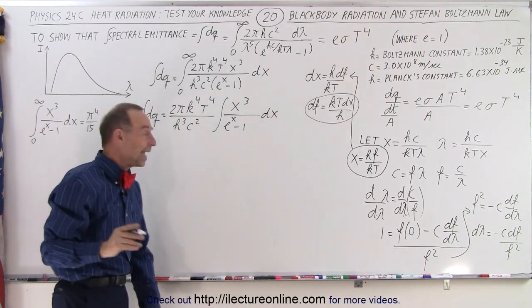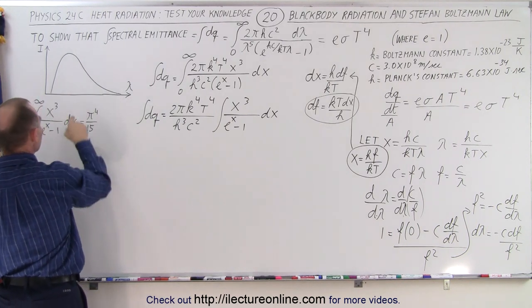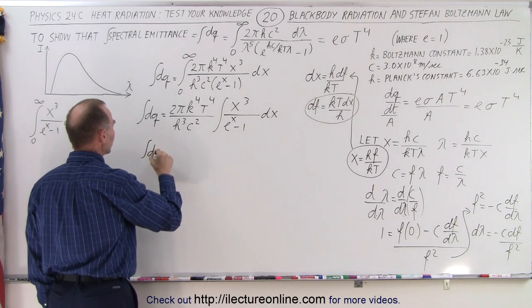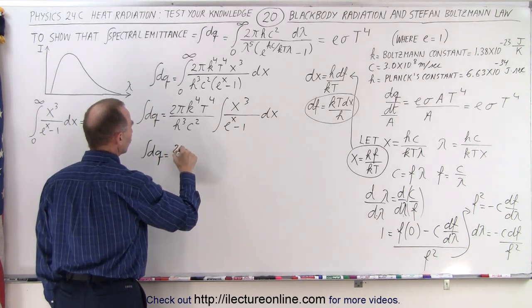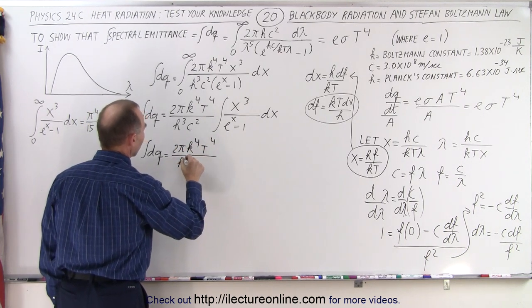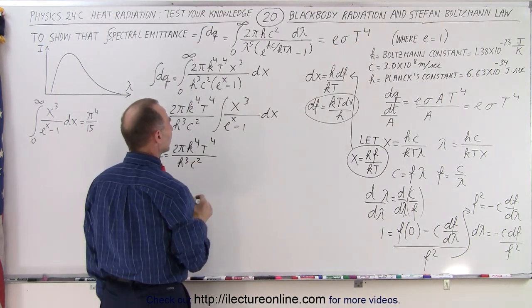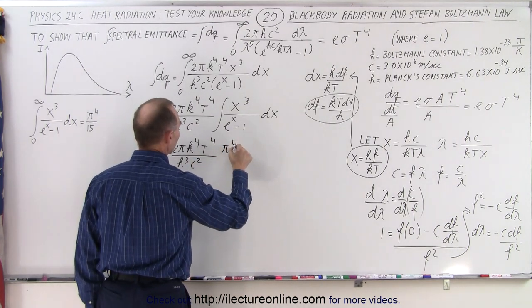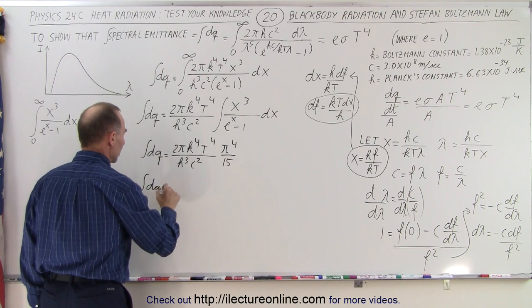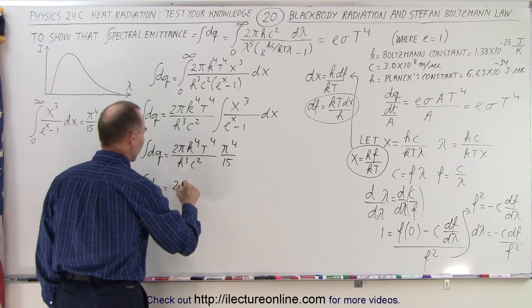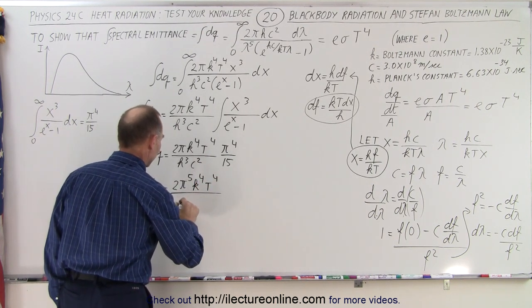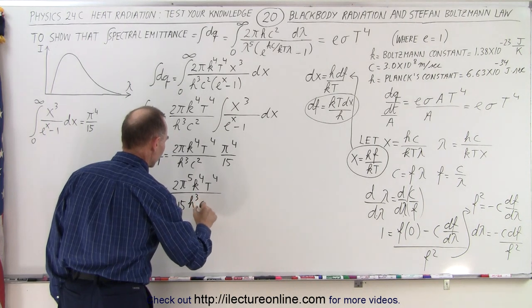And now we have this handy integral table that told us that the integral here is equal to π to the 4th over 15. So let's go ahead and replace that. That means that the integral of dq is therefore equal to 2πk to the 4th T to the 4th divided by h cubed c squared times π to the 4th over 15. And then if we bring all that together, the integral of dq is equal to 2π to the 5th k to the 4th T to the 4th divided by 15 h cubed c squared.